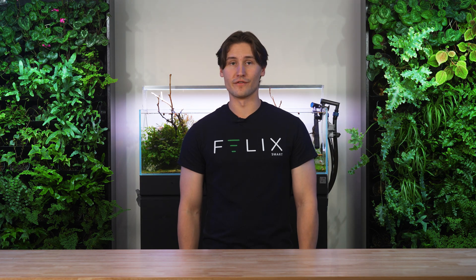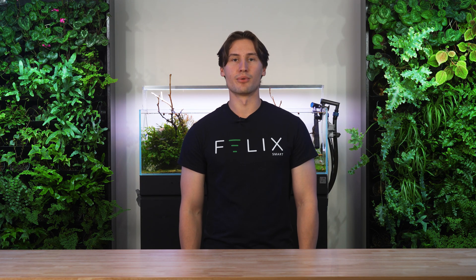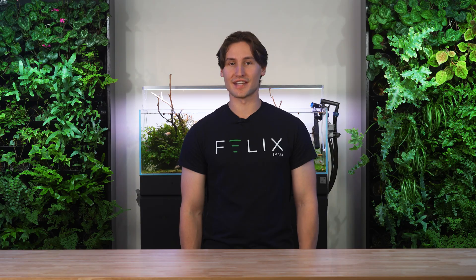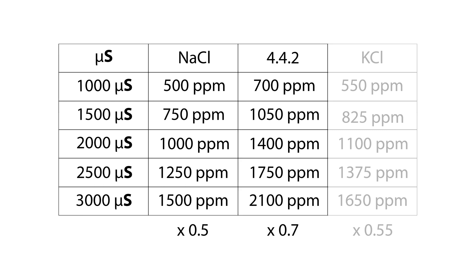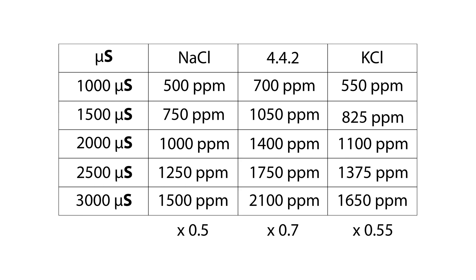There are several different common conversion methods to get TDS from EC. It's important to know which conversion method your probe is using, otherwise your value doesn't mean too much. The most common methods can be seen on this chart, and they are: the sodium chloride method, which multiplies EC by 0.5; the 442 method, which multiplies EC by 0.7; and the potassium chloride method, which multiplies EC by 0.55.